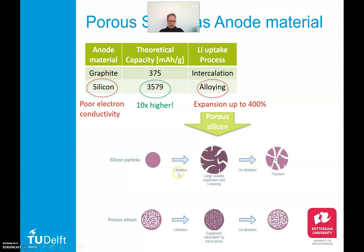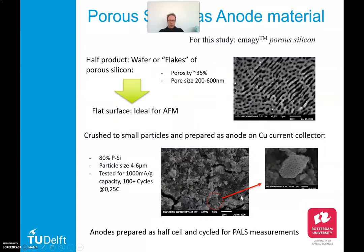Here you see this in this drawing. A silicon particle from normal silicon will expand, and because of this large volume you get cracking and fracture. But when you have a porous silicon particle, the expansion will be absorbed by the micropores. For this study we used eMaggie from the company eMaggie — a porous silicon that is available as a half product in the form of a wafer or flake. That is ideal for our purpose because for AFM we need a flat surface, so a wafer or flake is ideal for AFM investigations.